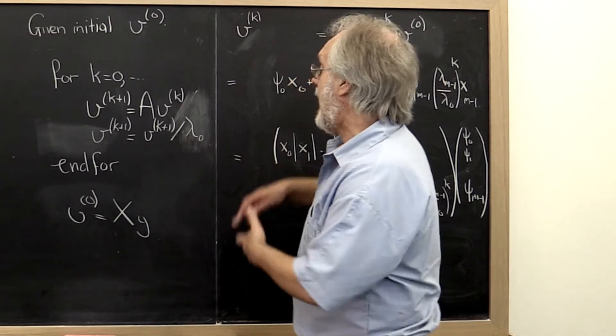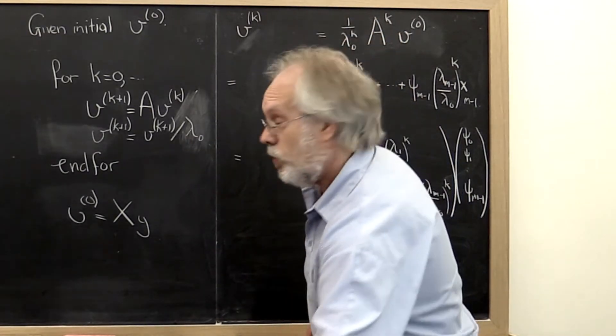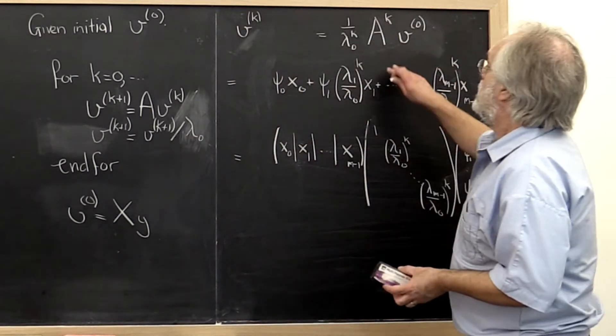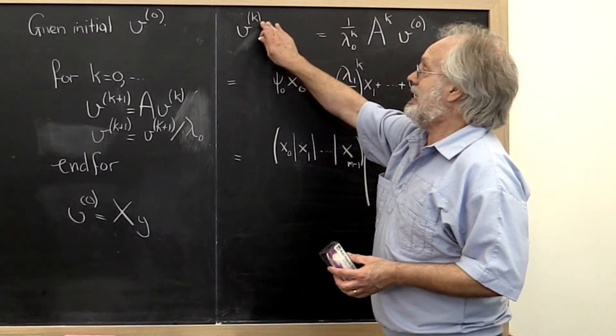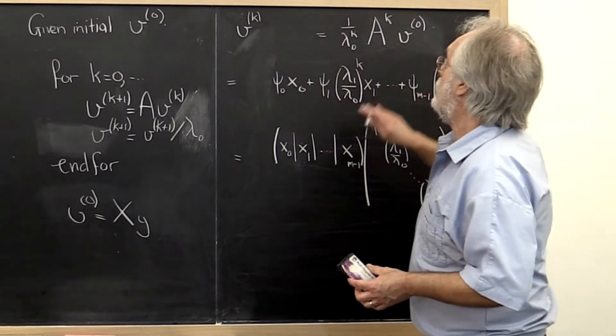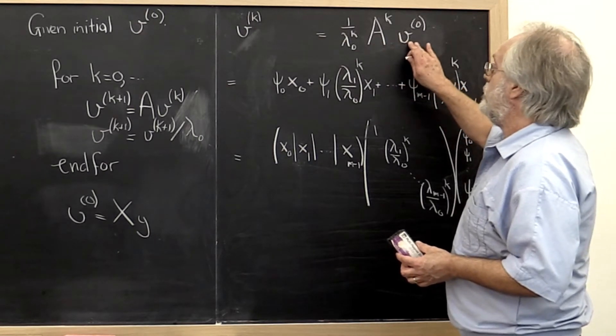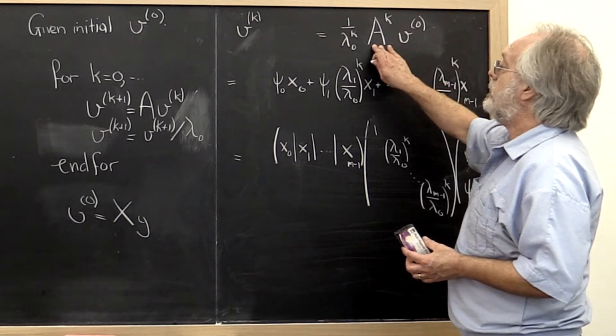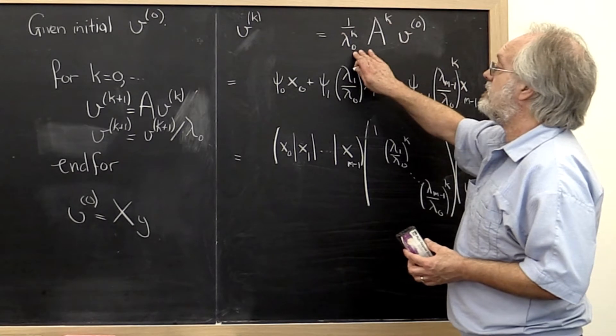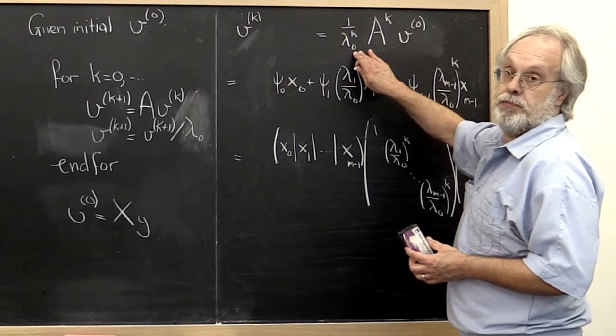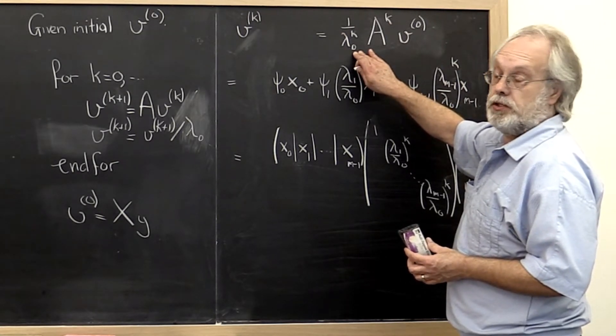Now in analyzing this, what we notice is that after the kth iteration, the vector that we have computed is actually equal to the original vector which has been hit by the matrix A k times but then scaled back k times by dividing by lambda 0.